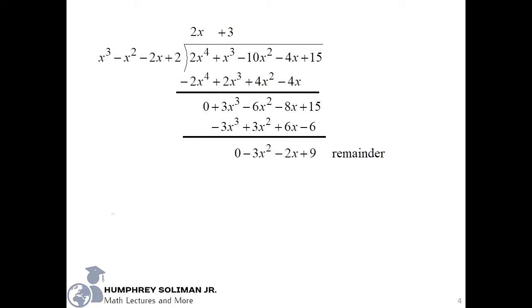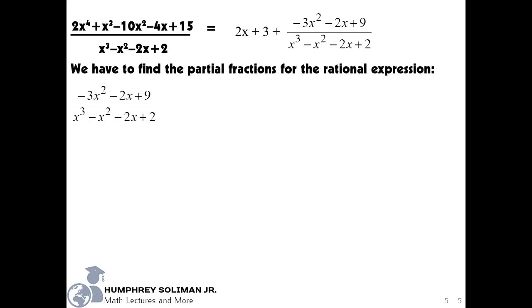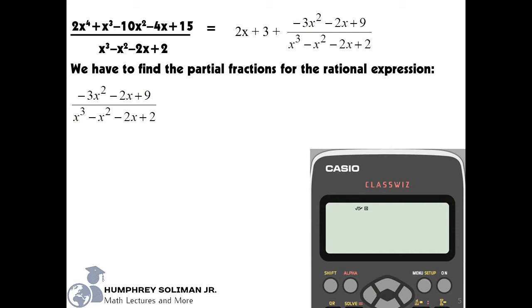We now have our polynomial and rational expression, but we are not yet done. We still need to find the partial fractions for the rational expression below. Our next move now is to write the denominator in factored form. So we will use the Casio ClassWiz calculator to help us find the factors for our denominator.